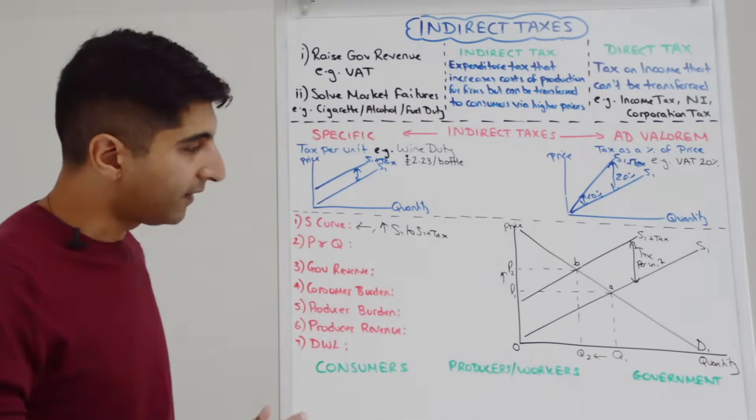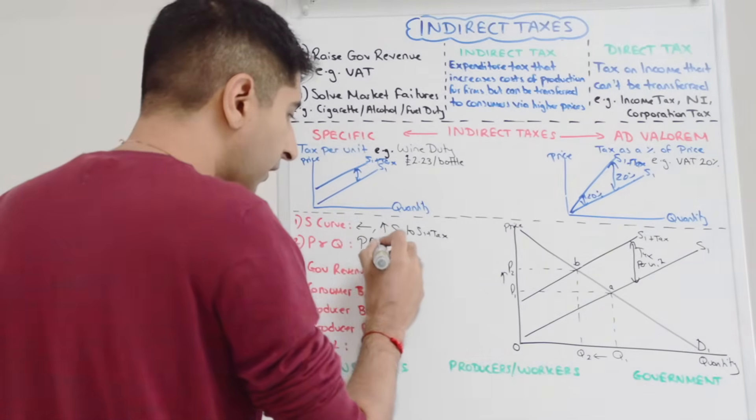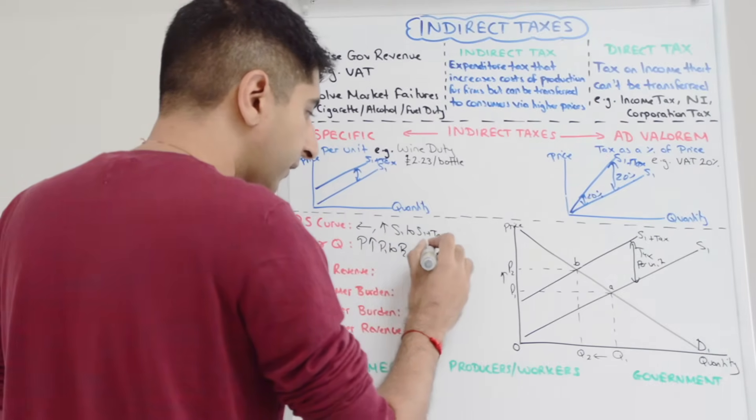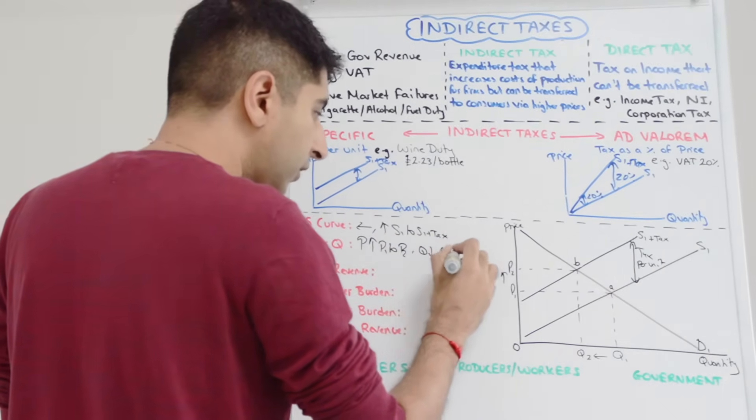And that's why we get a new equilibrium at point B, P2Q2. We can see that price has increased from P1 to P2 and quantity has decreased from Q1 to Q2.